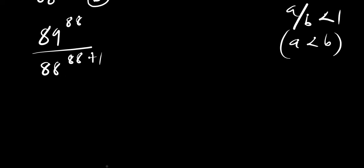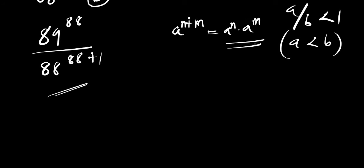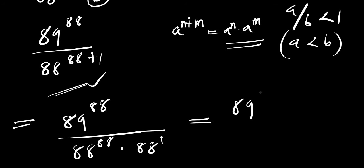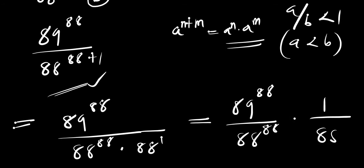At the denominator, we apply the identity: a to the power (n + m) equals a^n times a^m. Applying that identity, we get 89 power 88 divided by (88 power 88 times 88 power 1). This can be written as 89 power 88 divided by 88 power 88, times 1 divided by 88.